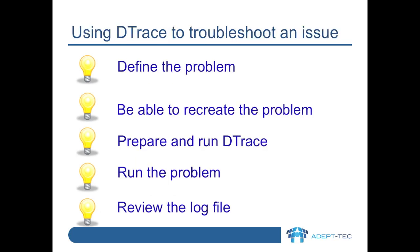DTrace can be used to troubleshoot an Enterprise Vault issue and is used when standard troubleshooting techniques fail to identify the problem. This is often the hardest part. Once you know you have a problem, you have to constantly refine the description of what you are trying to investigate. You need to be able to recreate the problem, which is very hard to do if the problem is intermittent or happens, say, two hours into a six hour archiving run.